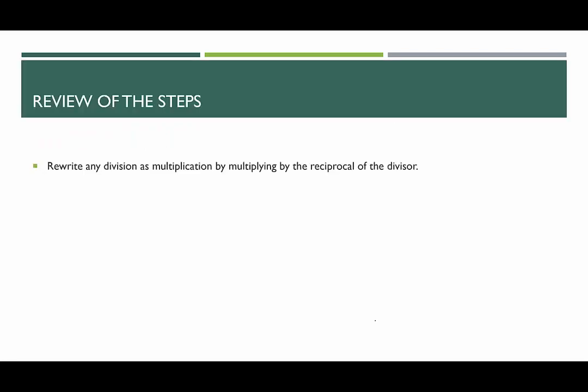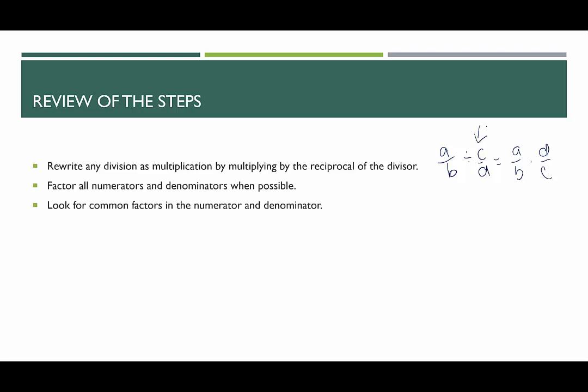First, let's review the steps. We want to rewrite any division as multiplication by multiplying by the reciprocal of the divisor. So if we have a over b divided by c over d, this is equivalent to a over b times d over c. Factor all numerators and all denominators when possible. Look for common factors in the numerator and denominator. Rewrite all remaining factors as one fraction.